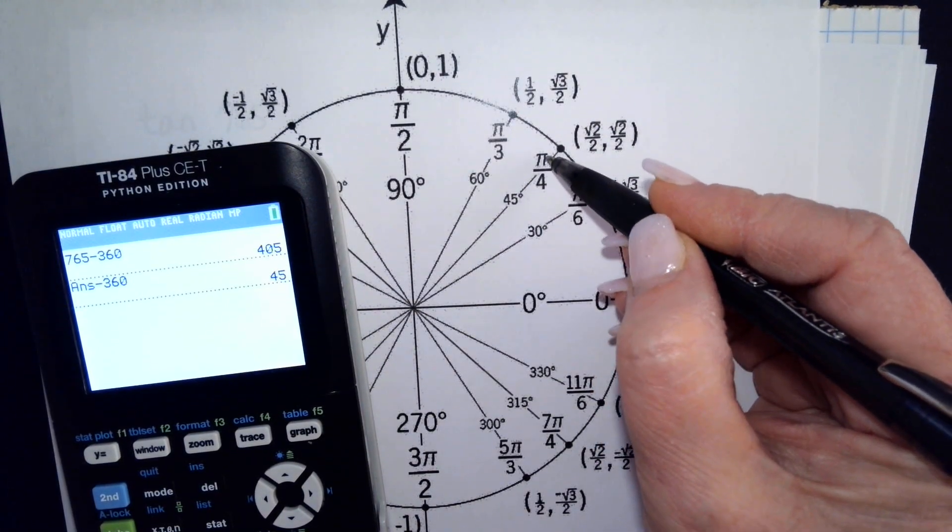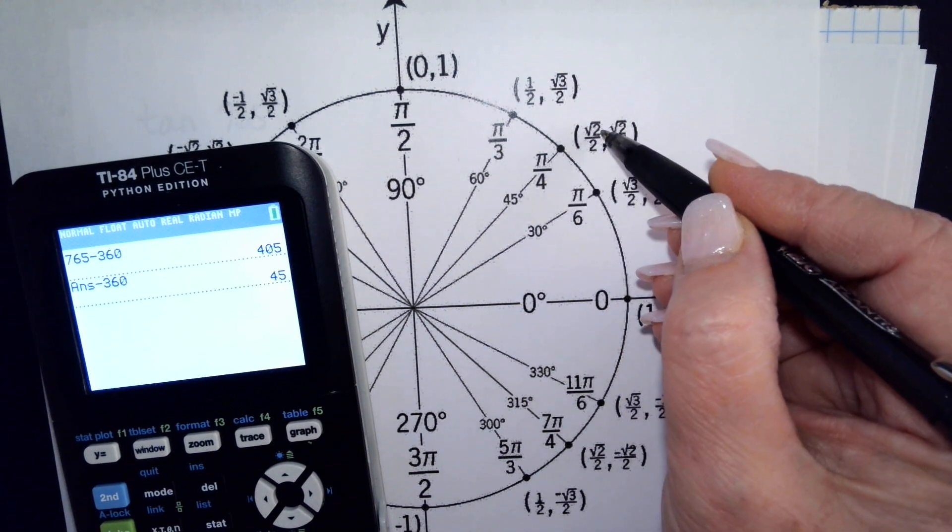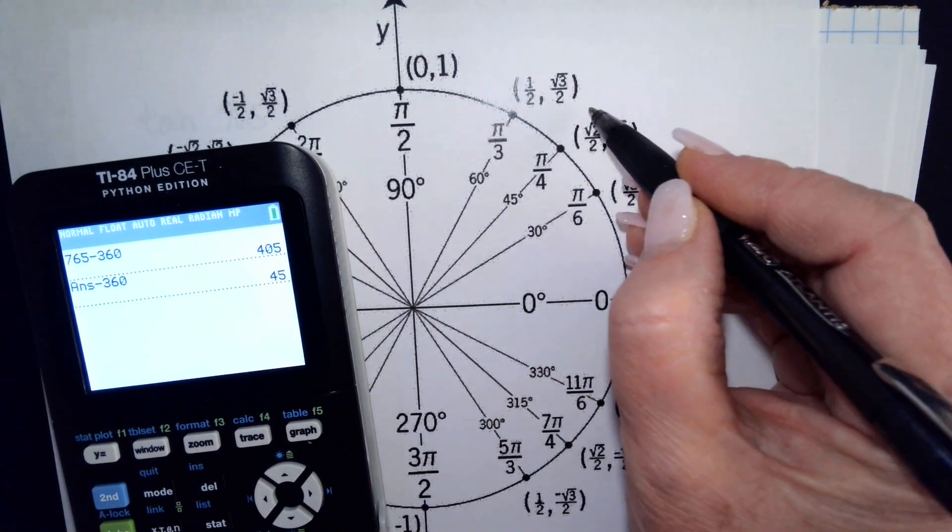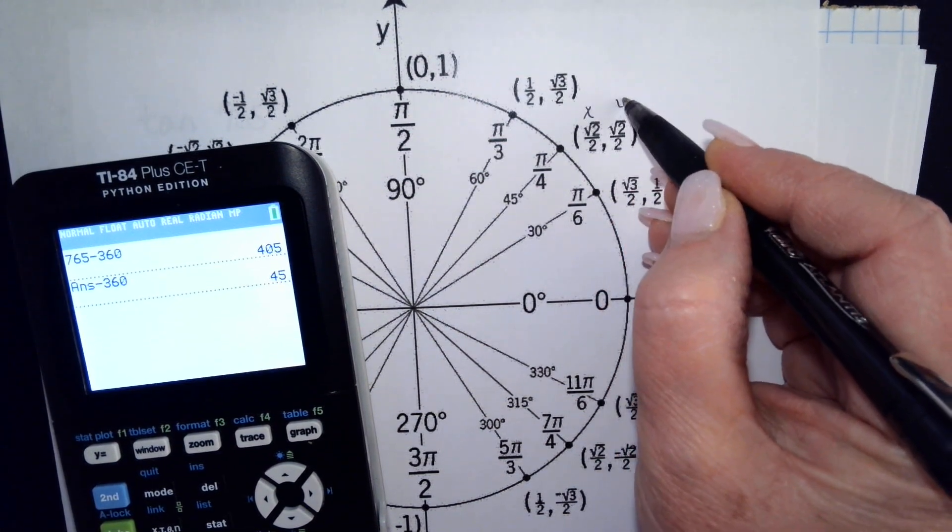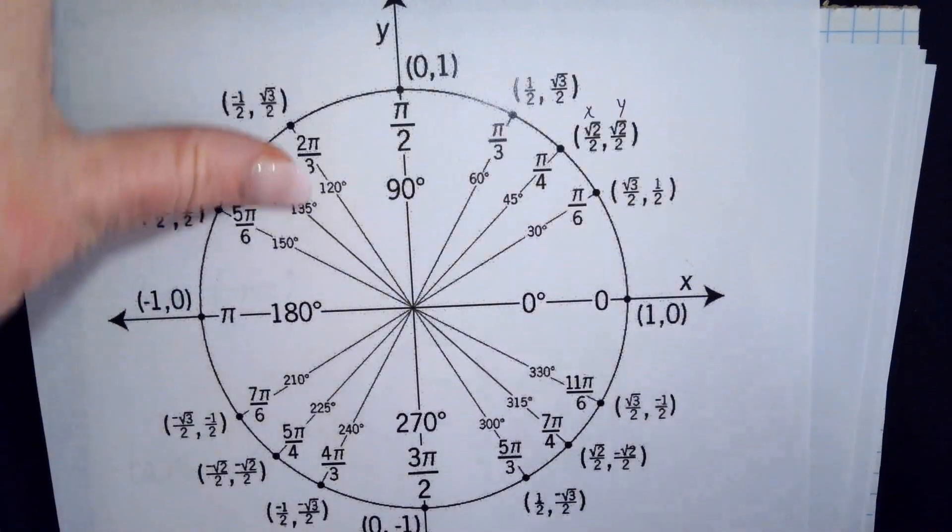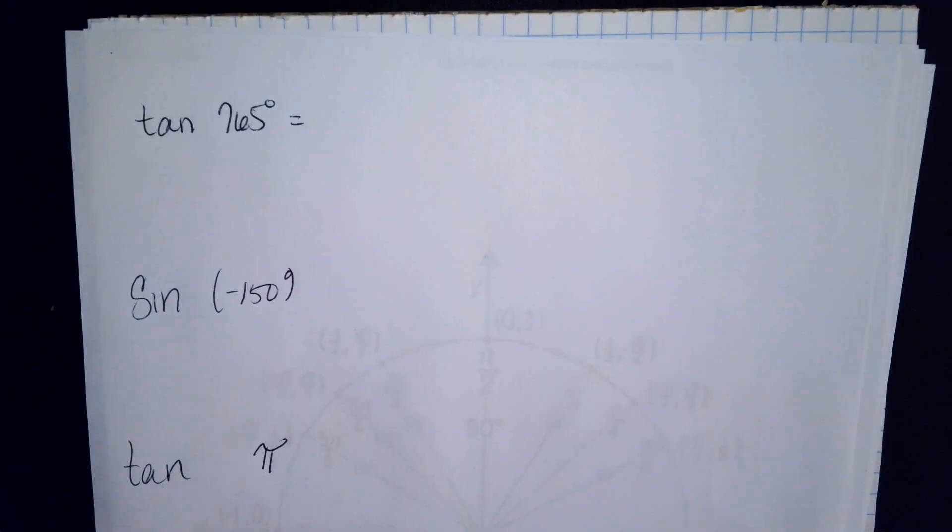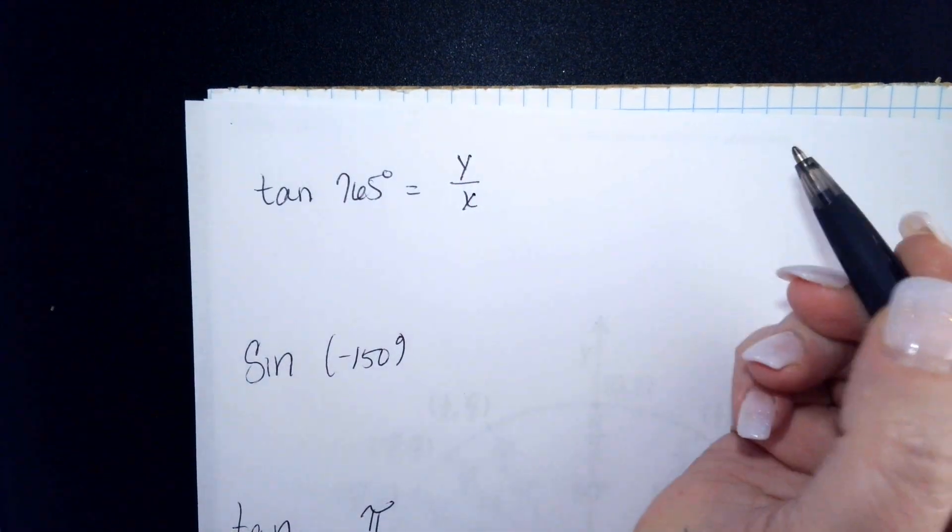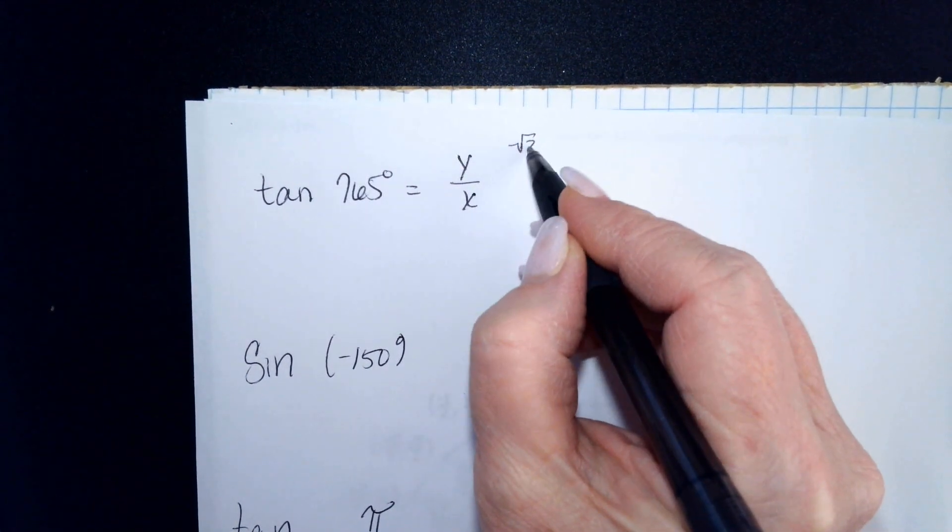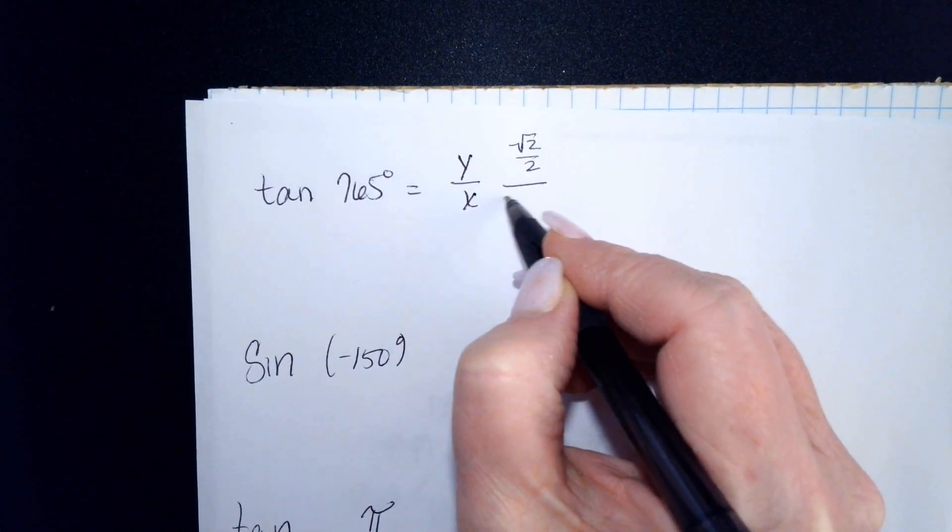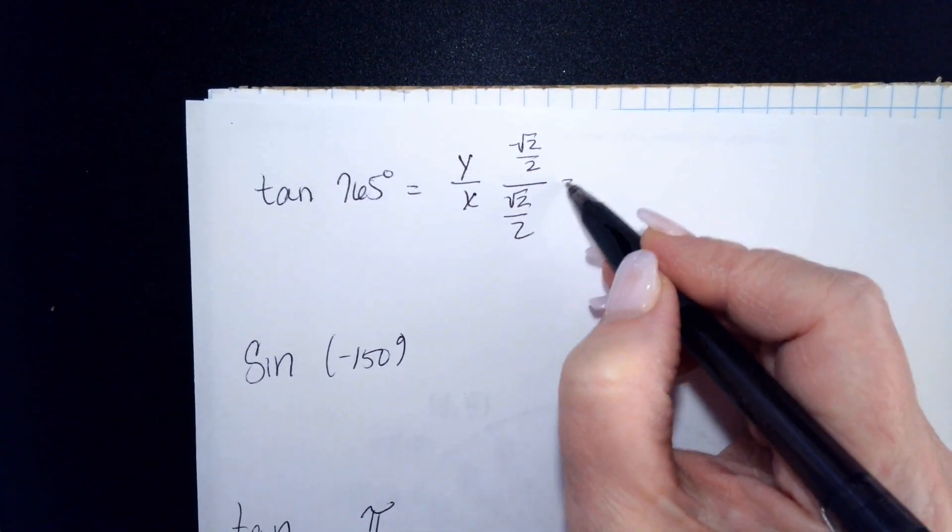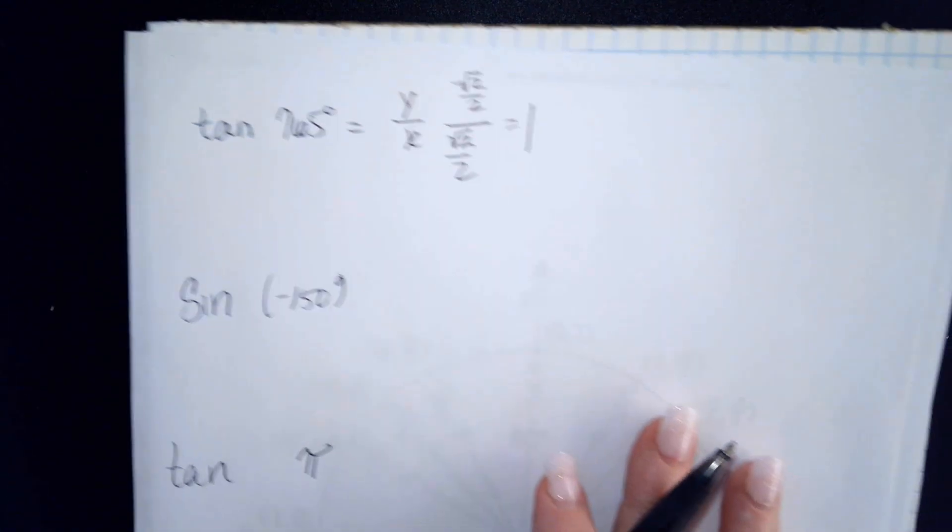45 degrees is equal to pi over 4. It also has a location of square root of 2 over 2 and square root of 2 over 2. So this is your x and this is your y. You're going to use those two values. And you know that tangent is y over x. So we're going to have the square root of 2 over 2 over the square root of 2 over 2. Same thing in top and bottom is equal to 1.